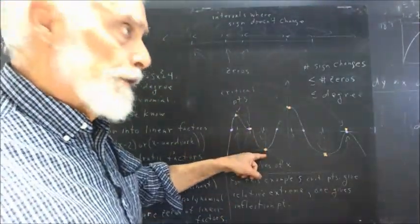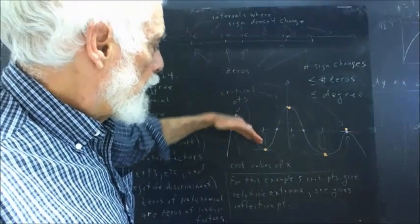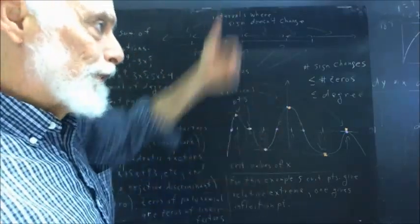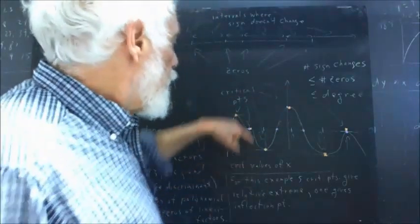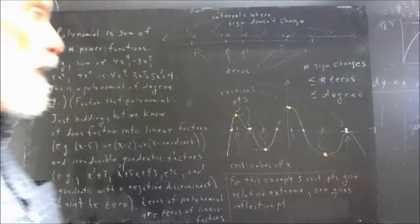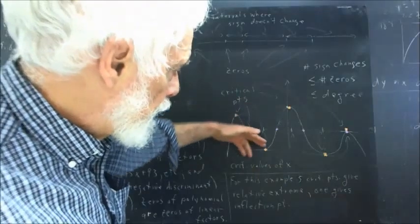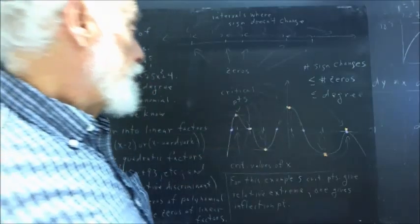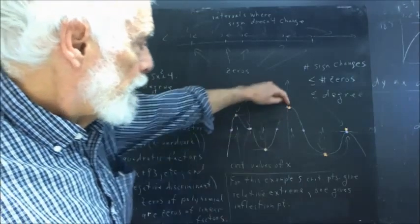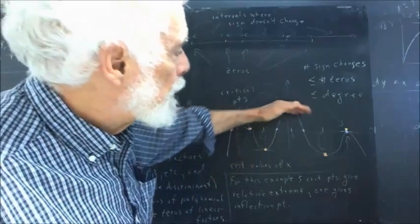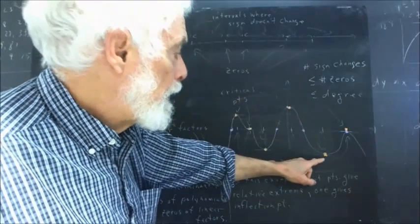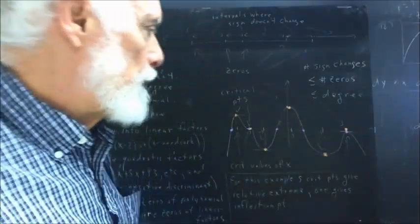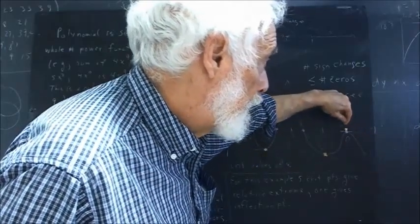At another critical point where the derivative goes from negative to zero to positive, the graph hits a relative minimum. Similarly: positive to zero to negative gives a relative maximum; negative to zero to positive gives a relative minimum; positive to zero to negative again gives a relative maximum.